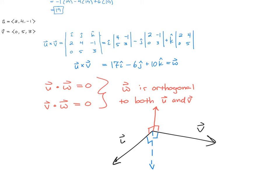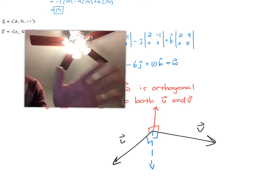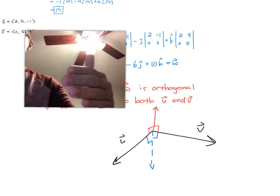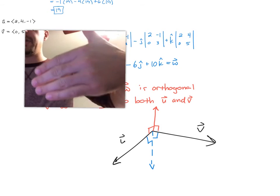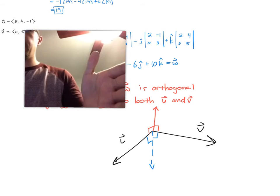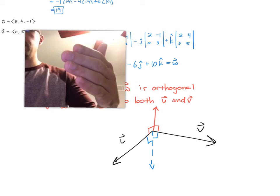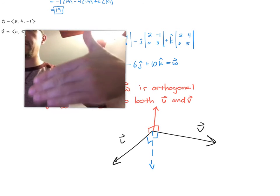That depends on the order that you do the cross product. So for u cross v, we have to use the right-hand rule. So the way that u and v are positioned in the picture, you put your hand,